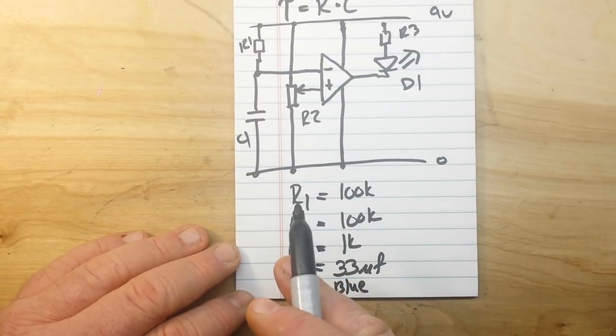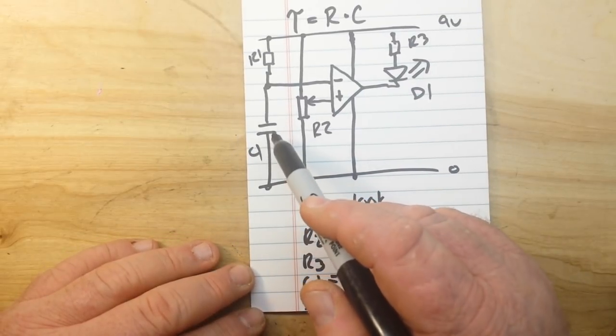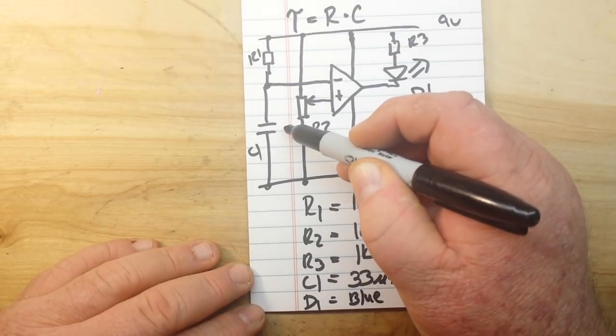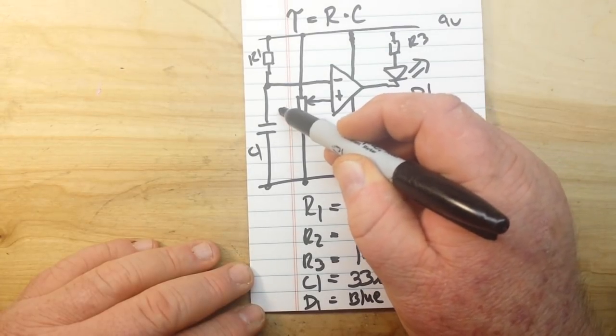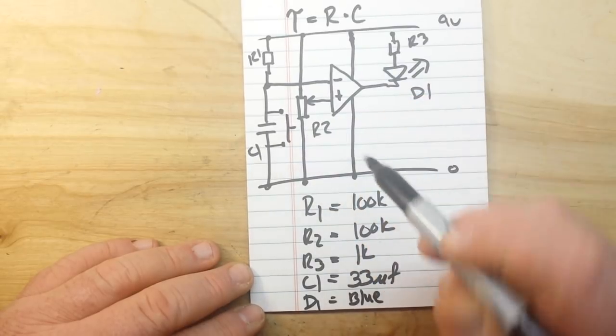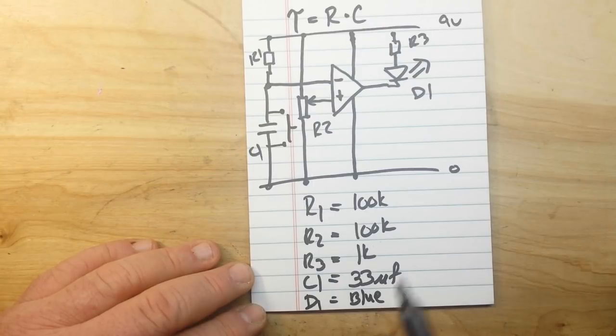Now one thing about this circuit is it is a single shot. So once this capacitor charges, it won't reset itself. So if we want to reset this circuit, we just need to put a switch across the capacitor and that will be our reset switch.